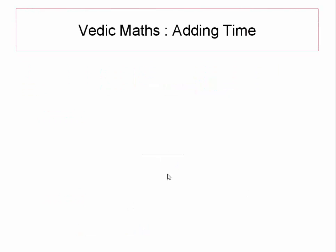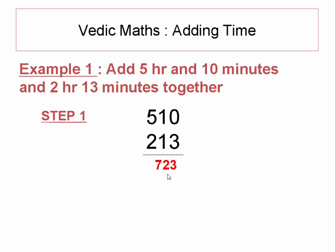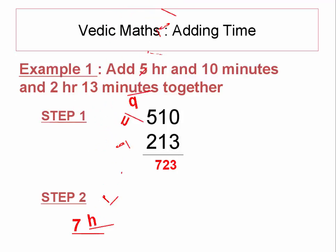Suppose you want to add 5 hours and 10 minutes and 2 hours and 13 minutes together. You simply write 510 plus 213, and the output is 723. Since 23 is less than 60, you do not need to add a time constant, and the answer is simply 7 hours and 23 minutes.